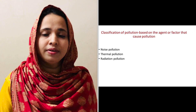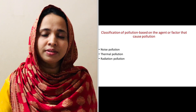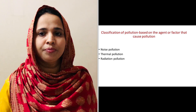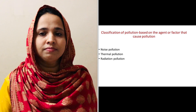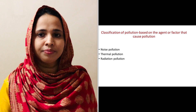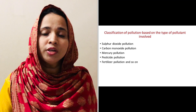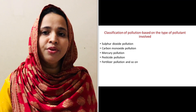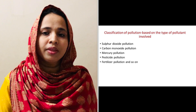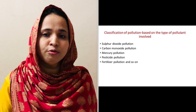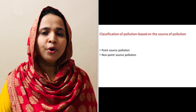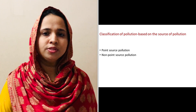Certain kinds of pollution are named after the agent or factor that may cause the pollution. For example, radiation pollution, noise pollution, etc. Similarly, on the basis of type of pollutant involved, we may have carbon monoxide pollution, mercury pollution, insecticide pollution, pesticide pollution. Another classification is point source of pollution and non-point source pollution.